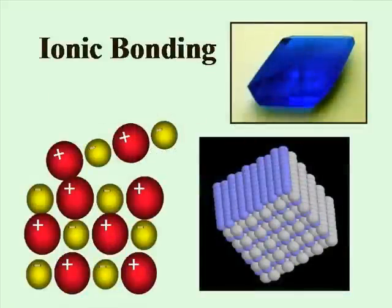Ionic bonding involves a transfer of electrons. The ionic compounds that are formed are brittle crystalline structures.